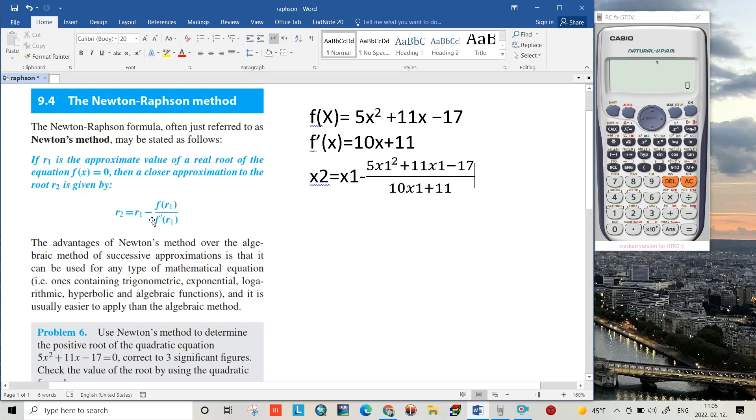That is the rule for Newton-Raphson method: x2 equals x1 minus function of x1 over derivative of the function of x1. Let us define the elements: x1 is the approximate value of a root of the equation, and x2 is a closer approximation to the root.